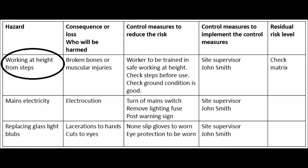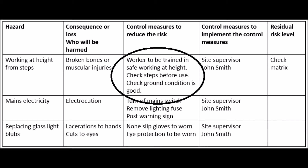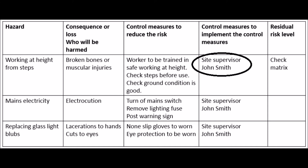Our hazard will be working at a height on steps, and therefore the consequence — who will be harmed — is there could be a fall from height causing broken bones or muscular injuries. The control measures to reduce the risk are: the worker to be trained in working at height, check steps before use, check ground condition is good. These control measures are to be implemented by the site supervisor.